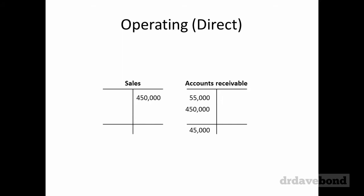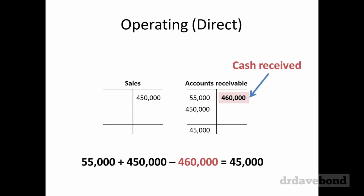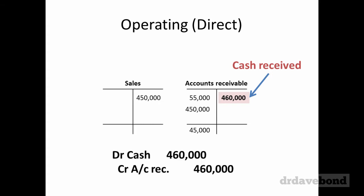That $450,000 goes into accounts receivable, but 55,000 plus 450,000 doesn't equal the closing balance of 45,000, which means something else has to have gone on. That is a $460,000 credit — the amount of cash received from customers over the course of that year. We're reconstructing the account: we have the start and ending balances, we know the sales effect, and whatever is needed to balance it out is the cash effect.